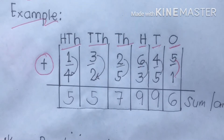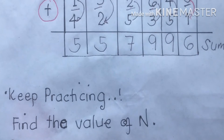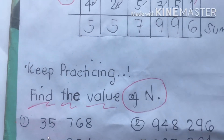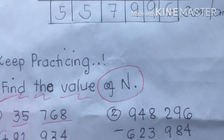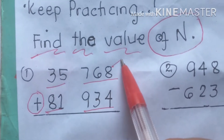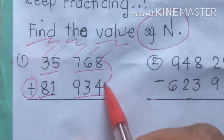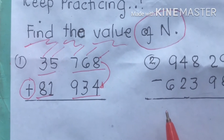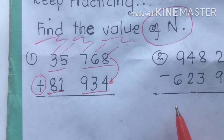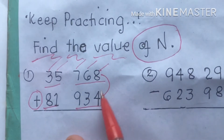Now we proceed to our exercises. Our direction: find the value of N, referring to the missing number in different equations. Number one: 35,768 plus 81,934. Same procedure — we start at the ones place value. Eight and four is our first pair. Remember your addition with grouping — when you have mastery, step-by-step instruction makes it easy. Eight and four gives us twelve.